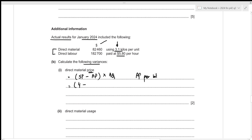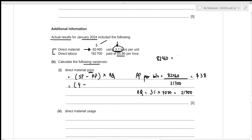To find the actual price per kilo, we divide total direct material cost by total actual quantity. Each unit required 3.1 kilos and actual units were 7,000, so total actual quantity is 3.1 times 7,000 = 21,700 kilos. Dividing $82,460 by 21,700 gives an actual price of $3.80 per kilo. The direct material price variance is (4.00 minus 3.80) times 21,700 = $4,340 favorable.